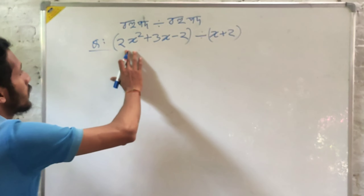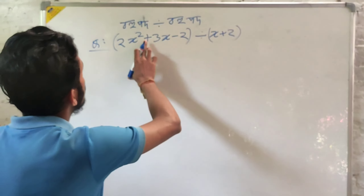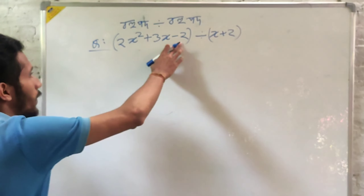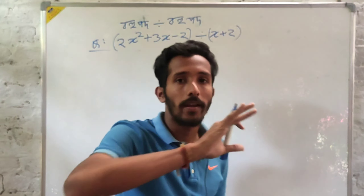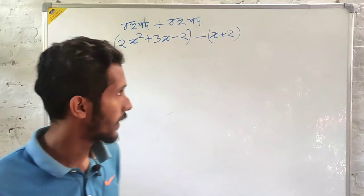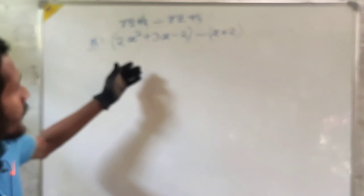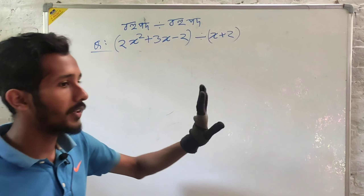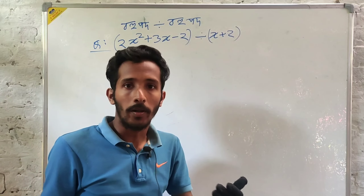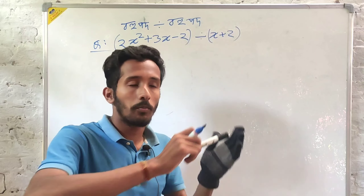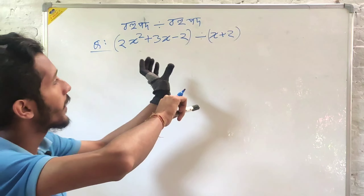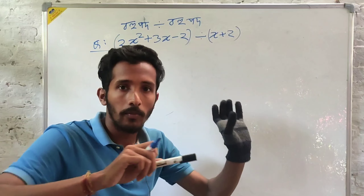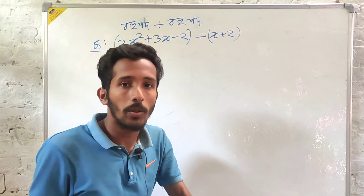I am going to talk about 2x squared plus 3x minus 2, where x plus 2 is the divisor. This divide is very important, and I think the divide method is the same as the long division method.